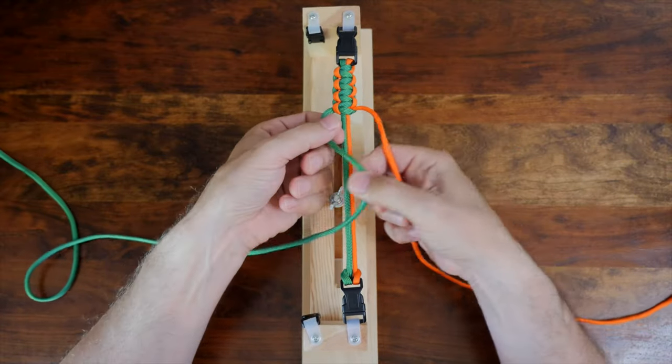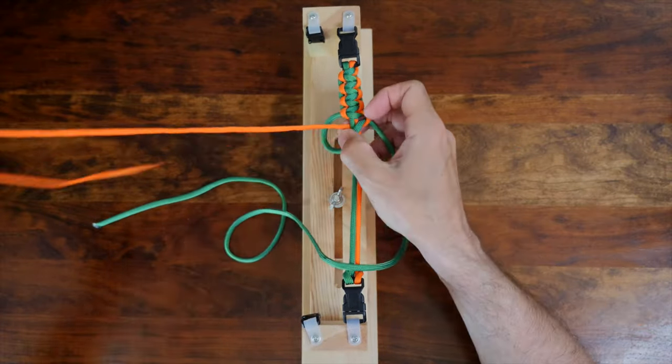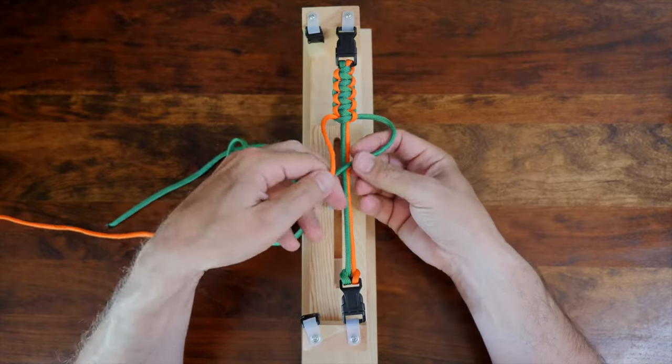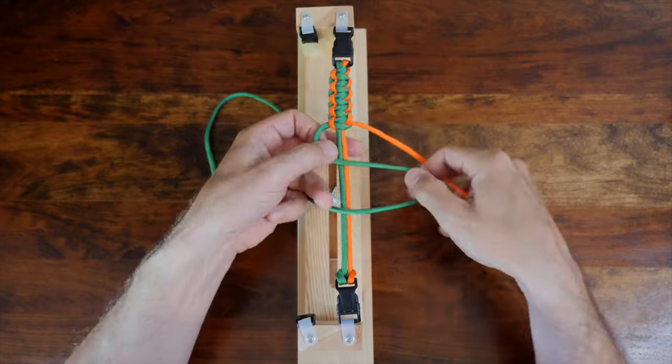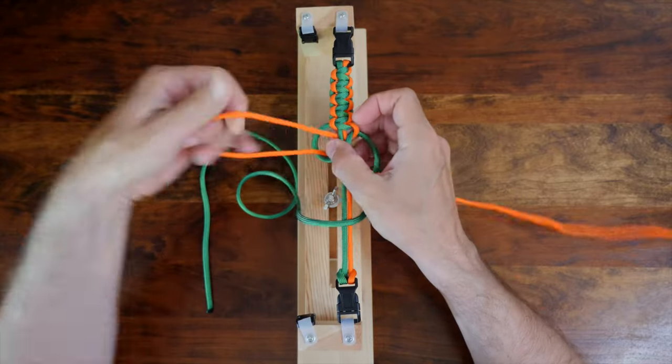So when I started this bracelet, I started on the left side, which was green, and now the green is on the center. If I wanted an orange center, then I would have started on the right hand side with the orange paracord.